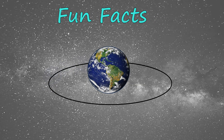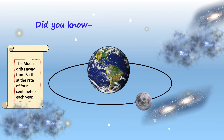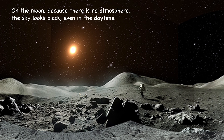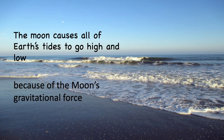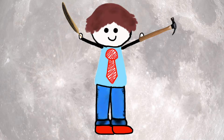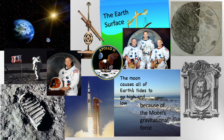Now it's time for some interesting fun facts! Did you know the moon drifts away from earth at a rate of 4 centimeters each year? The moon is the second densest satellite in the solar system after Jupiter's satellite Io. On the moon, because there is no atmosphere, the sky looks black even in the daytime. The moon causes all of earth's tides to go high and low because of its gravitational force. And because the moon has no atmosphere and no air resistance, a feather will fall just as fast as a hammer.